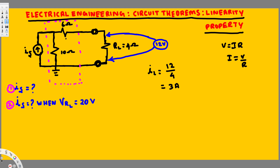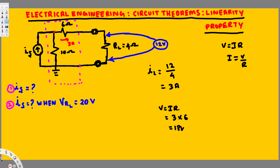The current across the load is 3 amperes, and since current is equal in series, the current through the 6Ω resistor must also be 3 amperes. Now, at this node, the voltage is going to be the addition of the voltage across the 6Ω and the voltage across the load. We already know the load voltage. Using V = IR, with 3 amperes through the 6Ω resistor, that gives us 18 volts.